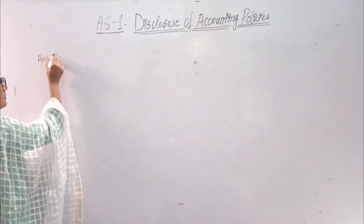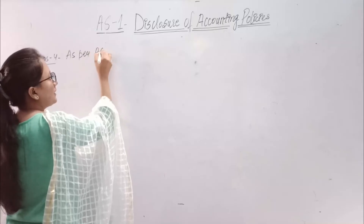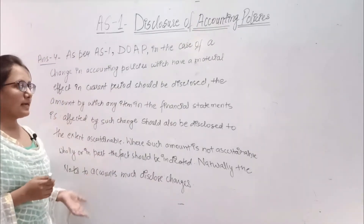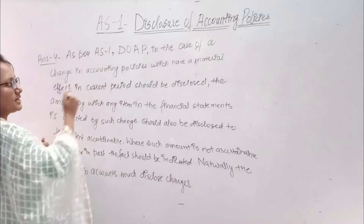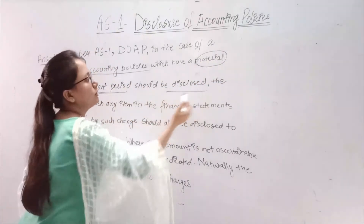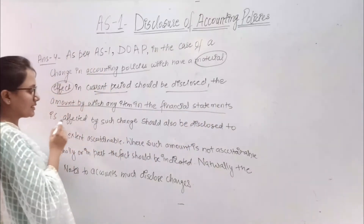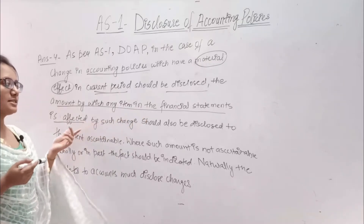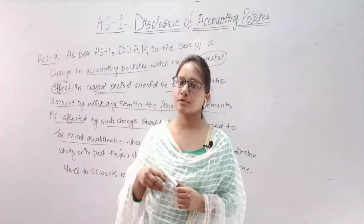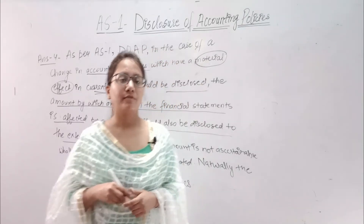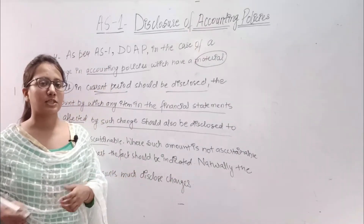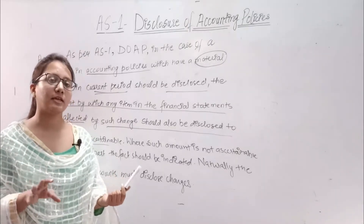Answer 4. As per Accounting Standard 1, Disclosure of Accounting Policies: if there is any change in our accounting policy, then the material effect in the current period should be disclosed. The amount by which any item in the financial statements is affected by such change should be disclosed to the extent as ascertainable. Where such amount is not ascertainable, wholly or in part, the fact should be indicated. If there is an accounting policy change but the amount cannot be calculated properly, we will only mention that which policy is changed.